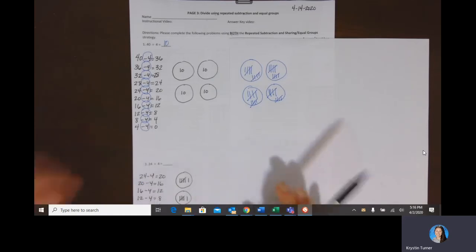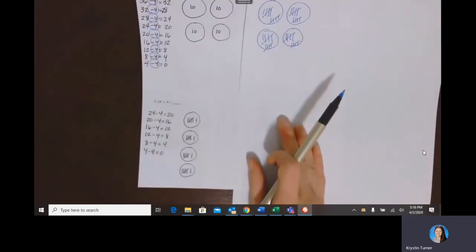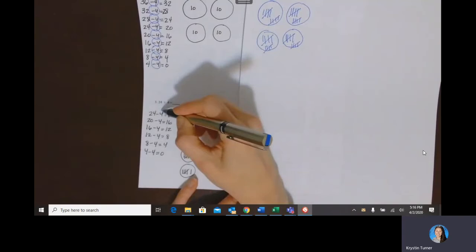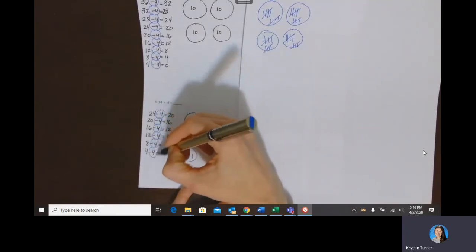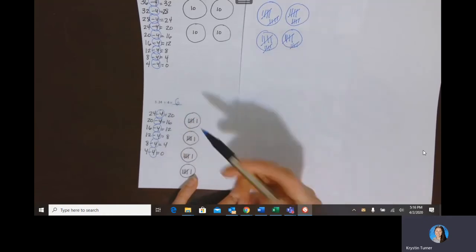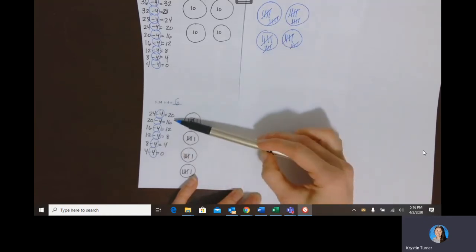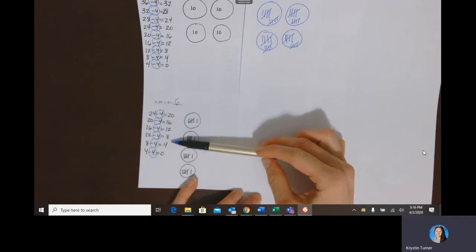So I did the same thing with 24. So 24, I just kept subtracting 4 and I found that I had one, two, three, four, five, six equal groups. And again, you have to be really careful and make sure that you're subtracting it correctly.